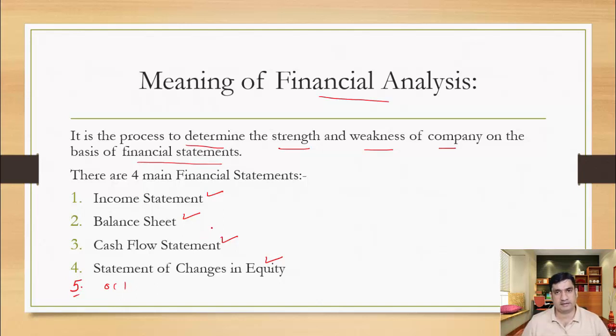We have one another statement called other comprehensive income or OCI statement. In our financial statement analysis, we generally focus on these three statements: income, balance, and cash flow. Ninety-five percent of the time, ratios will be calculated based on these financial statements.